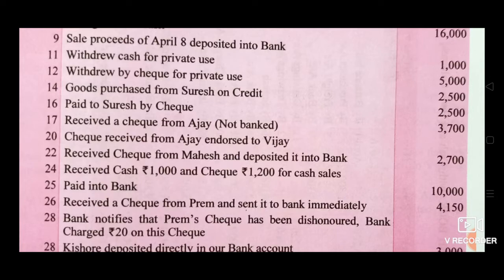14th: goods purchased from Suresh on credit Rs. 2,500. 16th: paid to Suresh by check Rs. 2,500. 17th: received a check from Ajay, not banked, Rs. 3,700. 20th: cheque received from Ajay, endorsed to Vijay. 22nd: received a check from Mahesh and deposited into bank Rs. 2,700.